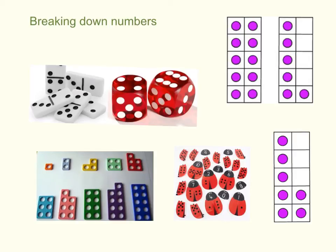Games and images that allow children to visualize numbers broken down in different ways are invaluable. For example, the ladybird and dominoes can represent five broken down in different ways, as four and one, and three and two.